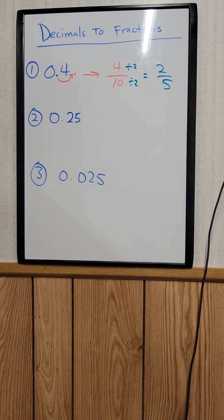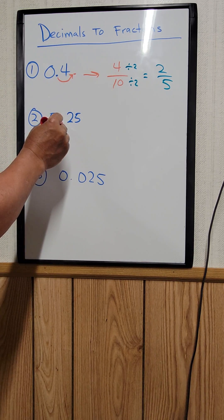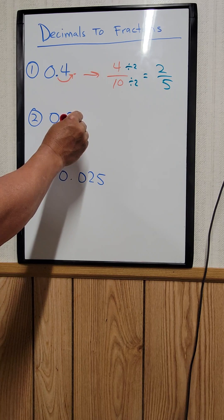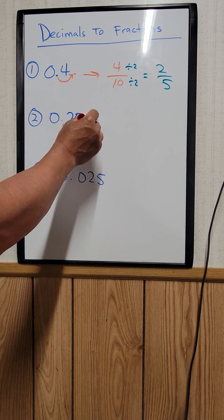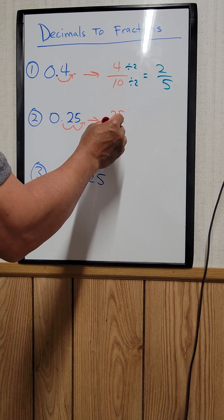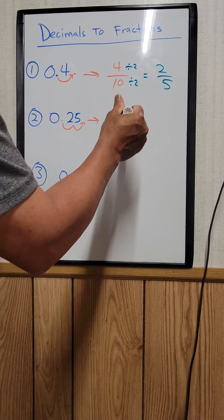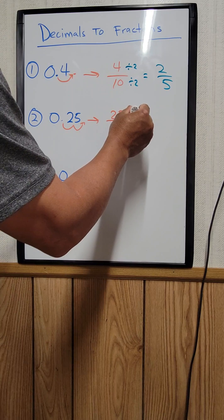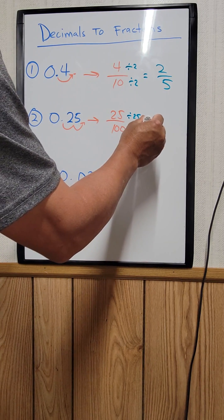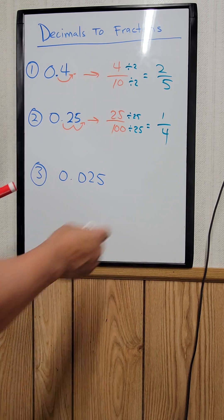How about the second one, 0.25? You want to move the decimal point two places, and that becomes 25 over 100. Then you divide the top and the bottom by 25, and this becomes 1 over 4. That's the answer.